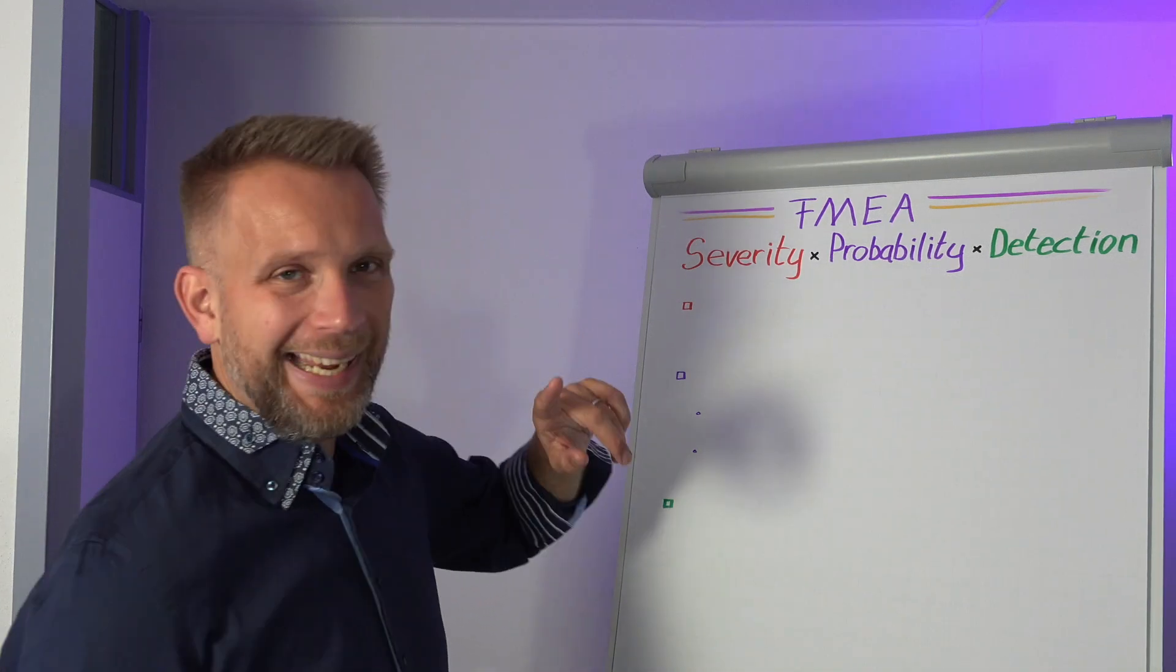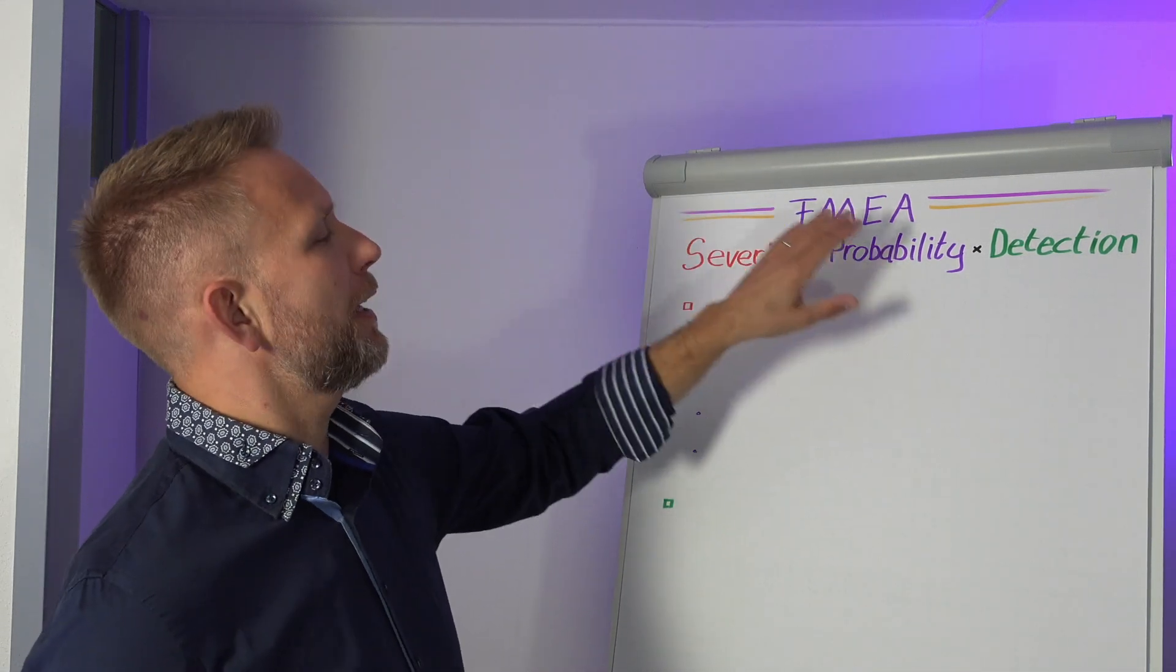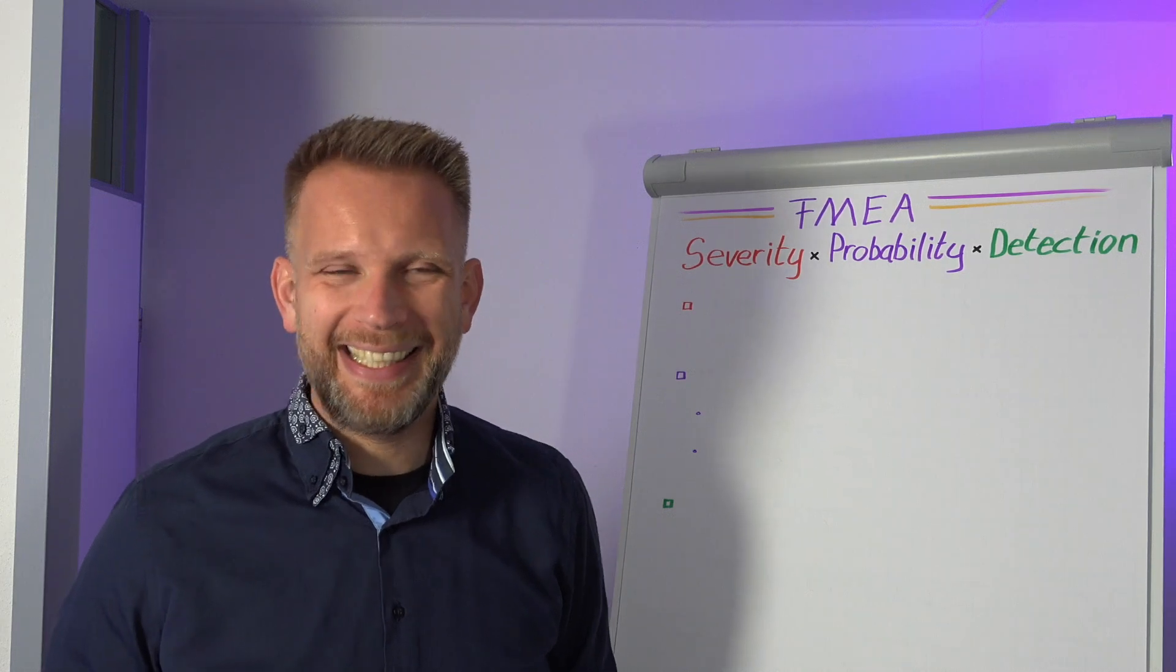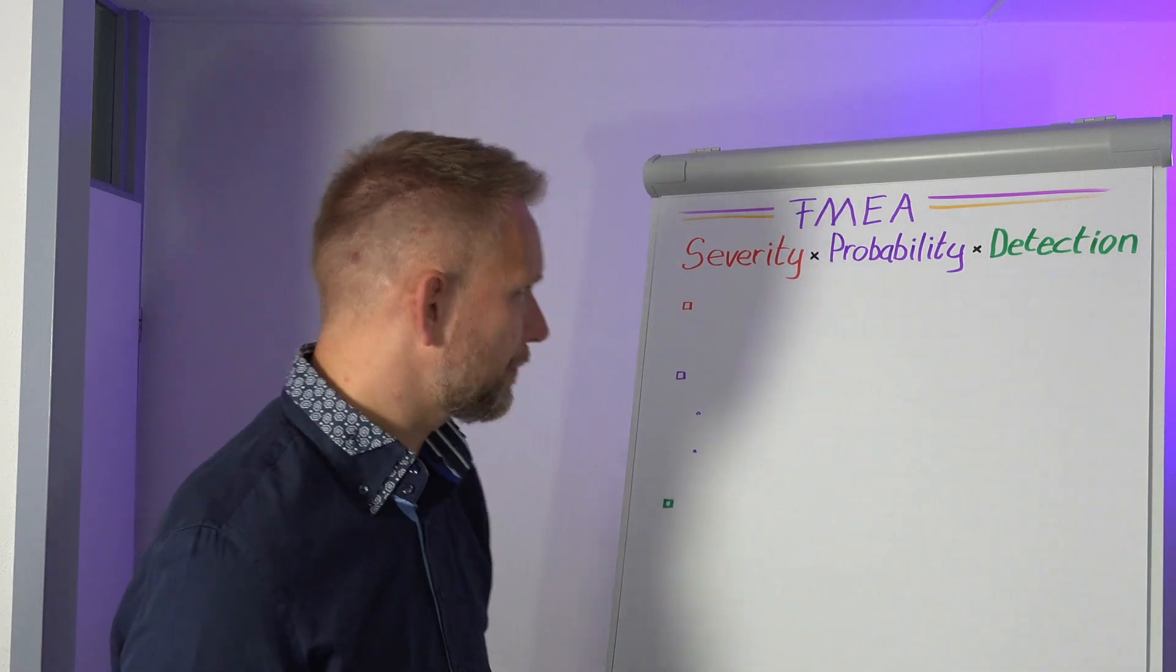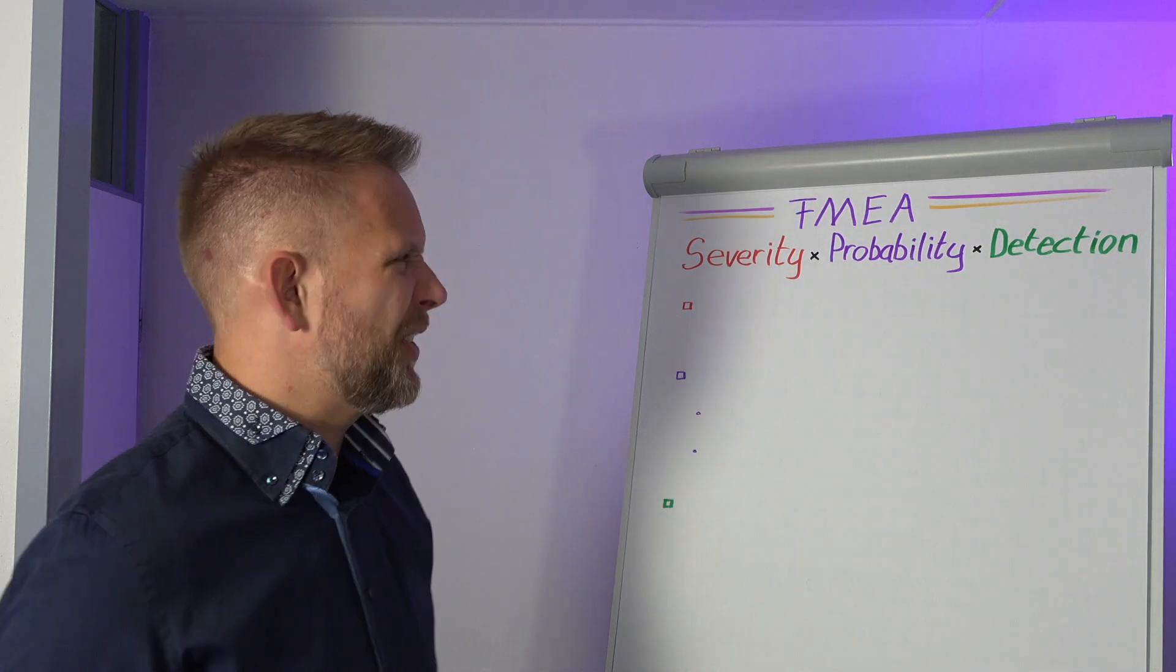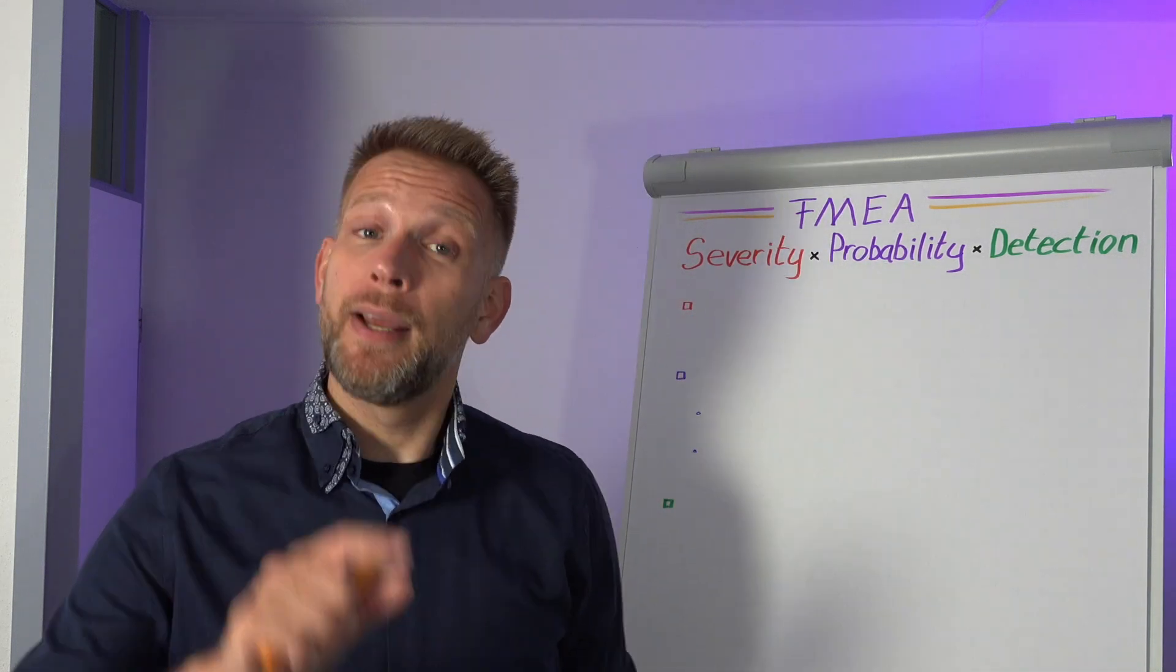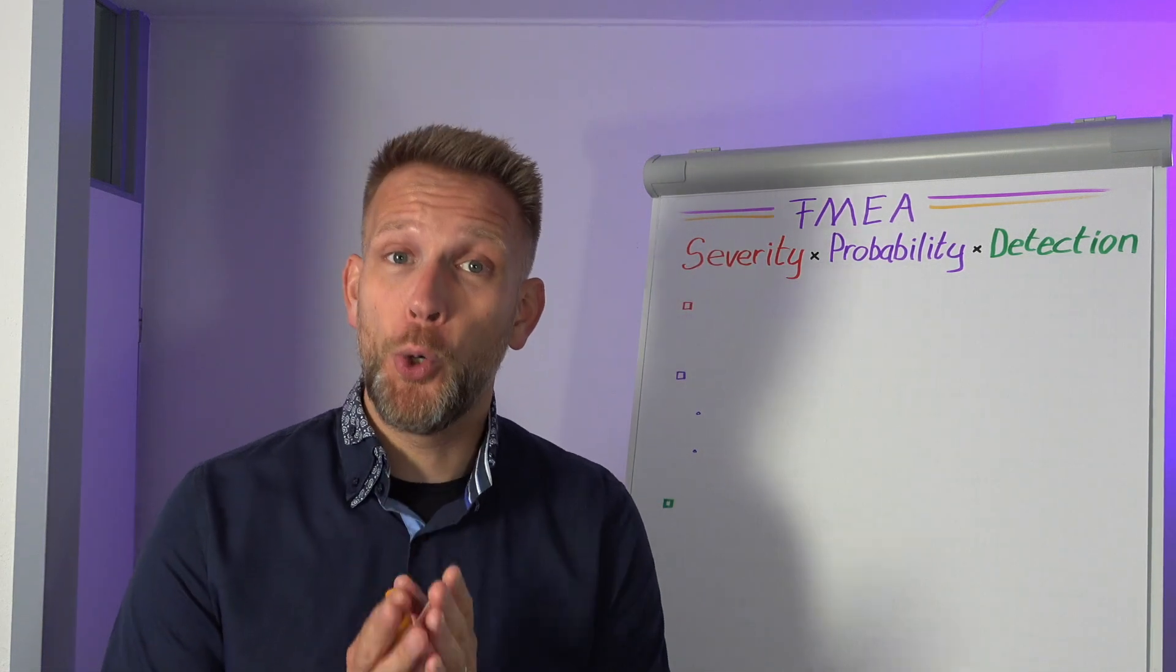What we look at in that analysis of failure modes and their effect is: how bad is it times how probable is it that it will happen times if it does happen how quickly will we detect it, or how long will it go undetected. This will generate a score. Companies use a five to ten point scale for each of these, and the very first bit of advice is make those scales for your own company.